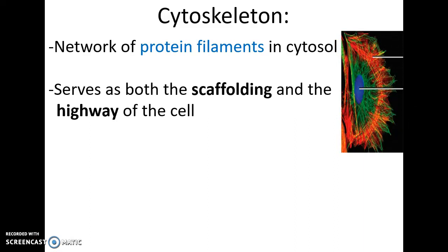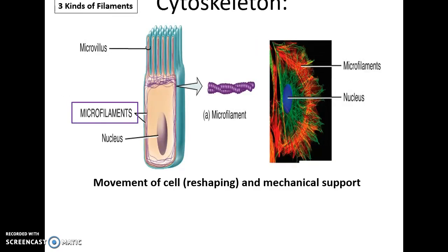The cytoskeleton serves as scaffolding to give the cell structure, allows the cell to change shape and move, and acts as a highway inside the cell, moving vesicles around. There are three main kinds of filaments. Microfilaments are the smallest, made of actin proteins, and help with shaping and reshaping the cell and providing mechanical support.